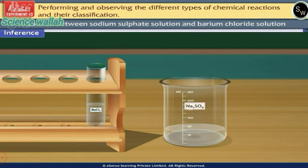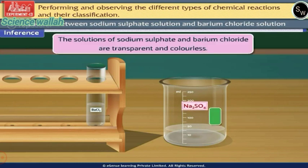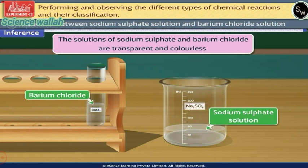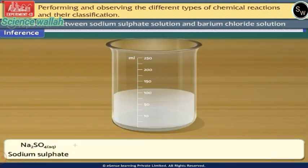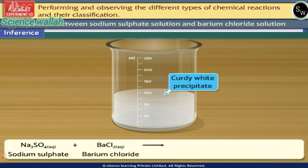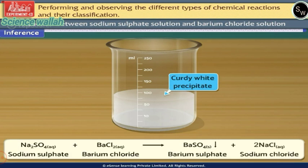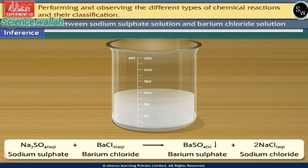Observe the changes — a white precipitate is formed. Inference: sodium sulphate reacts with barium chloride to form a curly white precipitate of barium sulphate, due to the formation of insoluble barium sulphate. This is an example of a double displacement reaction.